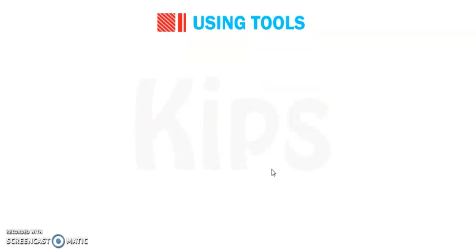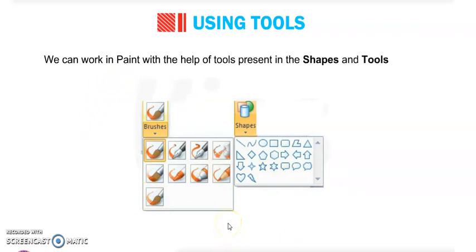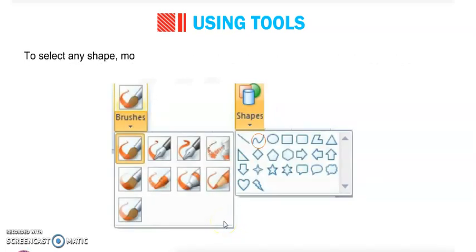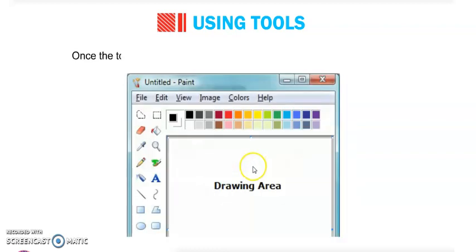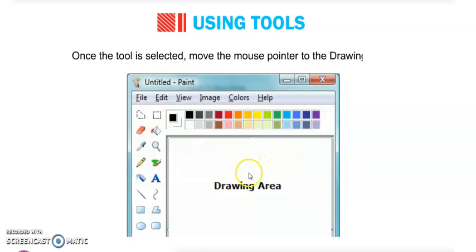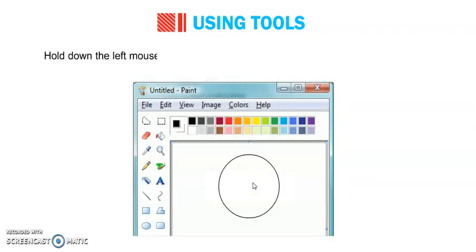Next is using tools. MS Paint has different types of tools. You can work in Paint with the help of these tools present in the shapes and tools group. To select any shape, move the mouse pointer to the tool or shape group and then click on it. Once the tool is selected, move the mouse pointer to the drawing area — the pointer changes into a cross symbol.